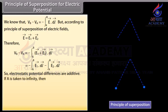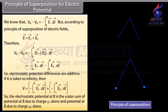If A is taken to infinity, then V equals the sum of minus the integral from infinity to B of E₁ dot dL and minus the integral from infinity to B of E₂ dot dL. So the electrostatic potential at B is the scalar sum of the potential at B due to charge Q₁ alone and the potential at B due to charge Q₂ alone. This result is applicable for any number of charges.